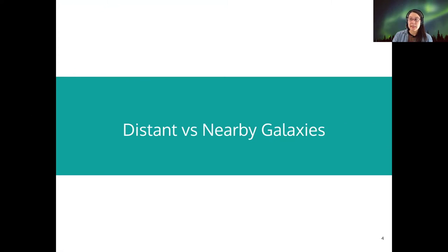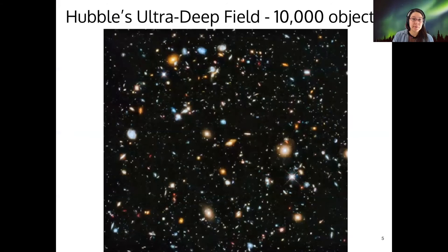Starting out on what we see in nearby galaxies and how that compares to very distant galaxies. We're going to be centering our discussion around this Hubble Ultra Deep Field image. There are 10,000 galaxies in this image.